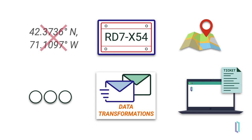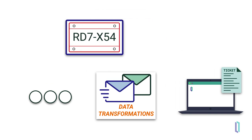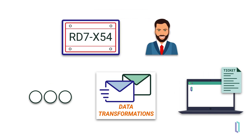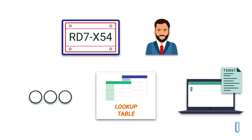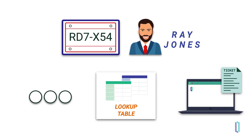the business process can send only the information it needs. Or if the ticket application actually needs the name of the owner, the data transformation can apply a lookup table on the license to identify the name of the owner.